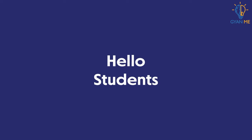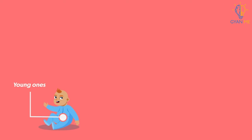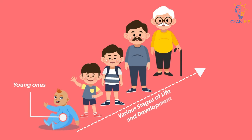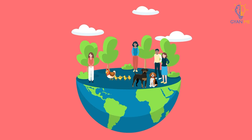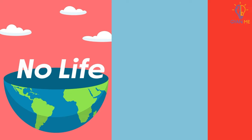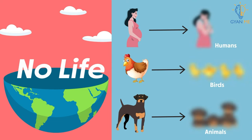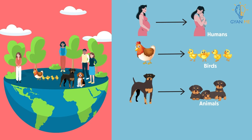Hello students! Today we will start a new chapter: Reproduction. All organisms start their life from infants. They undergo various stages of life and development and then ultimately die. But does this mean that all living organisms on this planet will die and there will be no life on this planet? No. This is because today's organisms will give rise to new organisms of their type and life will continue. This process of continuing the life on earth is called Reproduction.